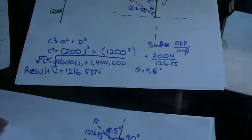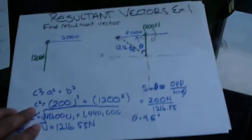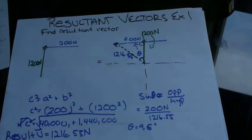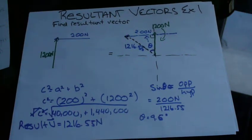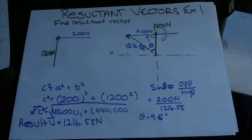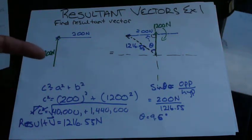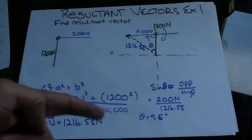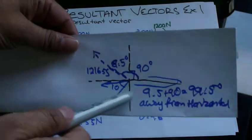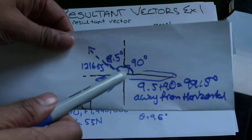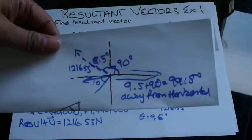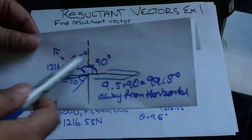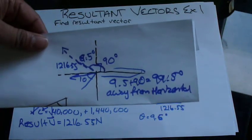So what we did was we re-drew the whole problem. Always do that, I advise you do that. Use Pythagorean's theorem to figure out the magnitude. Once we have the magnitude, we could figure out the direction it's in, and then relate it back to the horizontal of the coordinate system. So we know the direction. In this case, 9.5 plus 90, 99.5 degrees away from the horizontal.